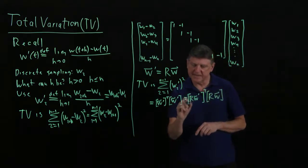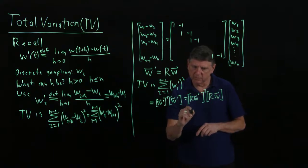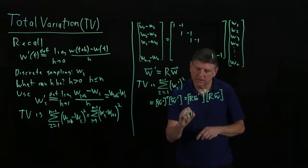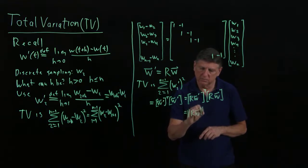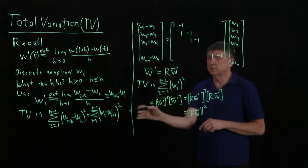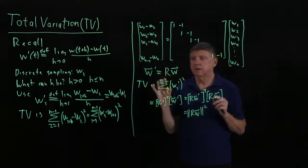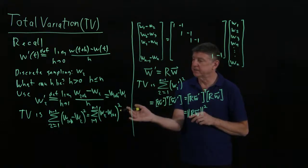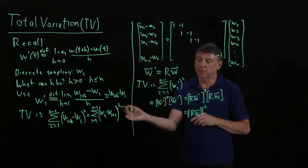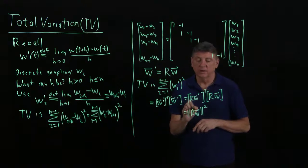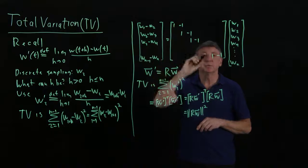And I can then say that equals, well that is the norm of R w squared. And so, this form of total variation using the squared integral definition of total variation, and then converting it into a discrete problem, that turns out to be the same as Tikhonov regularization, where the regularization matrix R is this simple banded matrix.